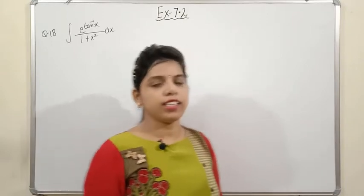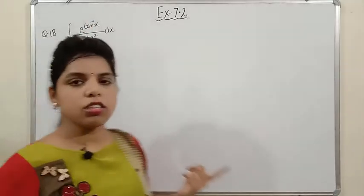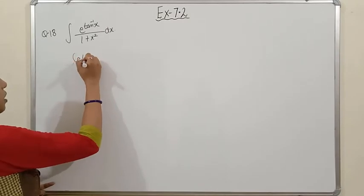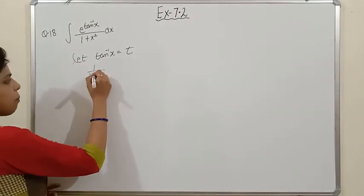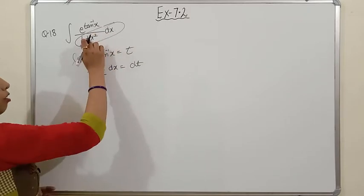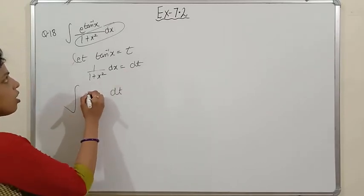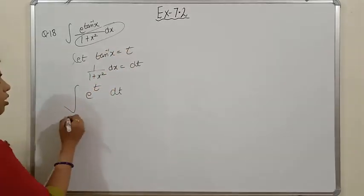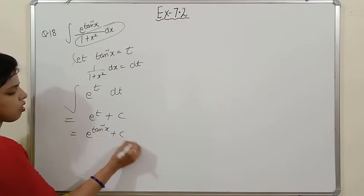Question 18: integration of e^(tan⁻¹x)/(1 + x²) dx. Here the function and its derivative are both directly given. Let tan⁻¹x = t. The derivative of tan⁻¹x is 1/(1 + x²), so (1/(1+x²)) dx = dt. The integral becomes ∫e^t dt = e^t + c = e^(tan⁻¹x) + c. Please note this down.